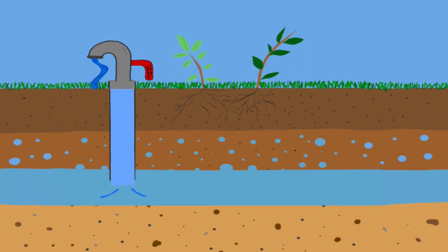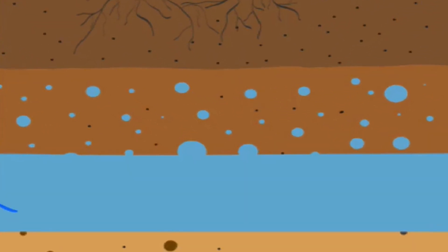Underground water is stored in aquifers, gaps in rocks, and pores in soil that fill with water acting as an underground lake.